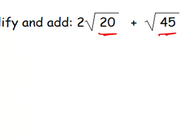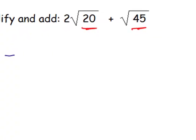Instead, we have to treat them as if they are like terms and make sure that the radicals are exactly the same before we can add them together. So to add these radicals, to combine them, we must first see if we can simplify the square roots that we have, the square root of 20 and the square root of 45.